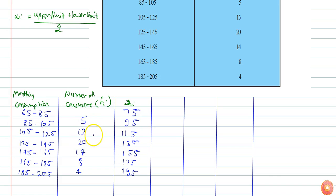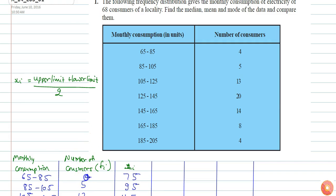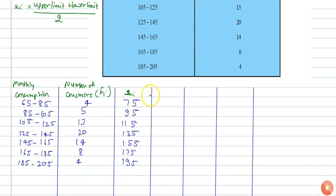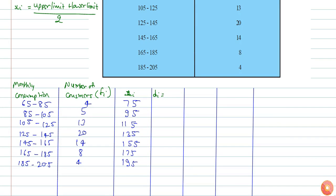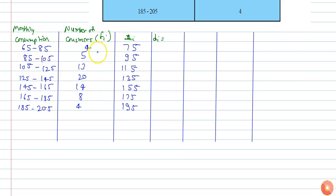The next column is for di. I am using the step deviation method to calculate the mean of the given data. di is nothing but xi minus a, where a is the assumed mean.